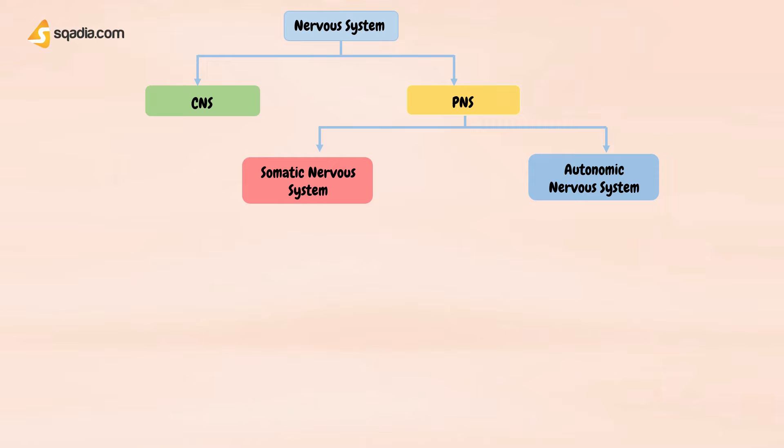The central nervous system and peripheral nervous system work together, providing sensory, integrative, and motor functions to the body.